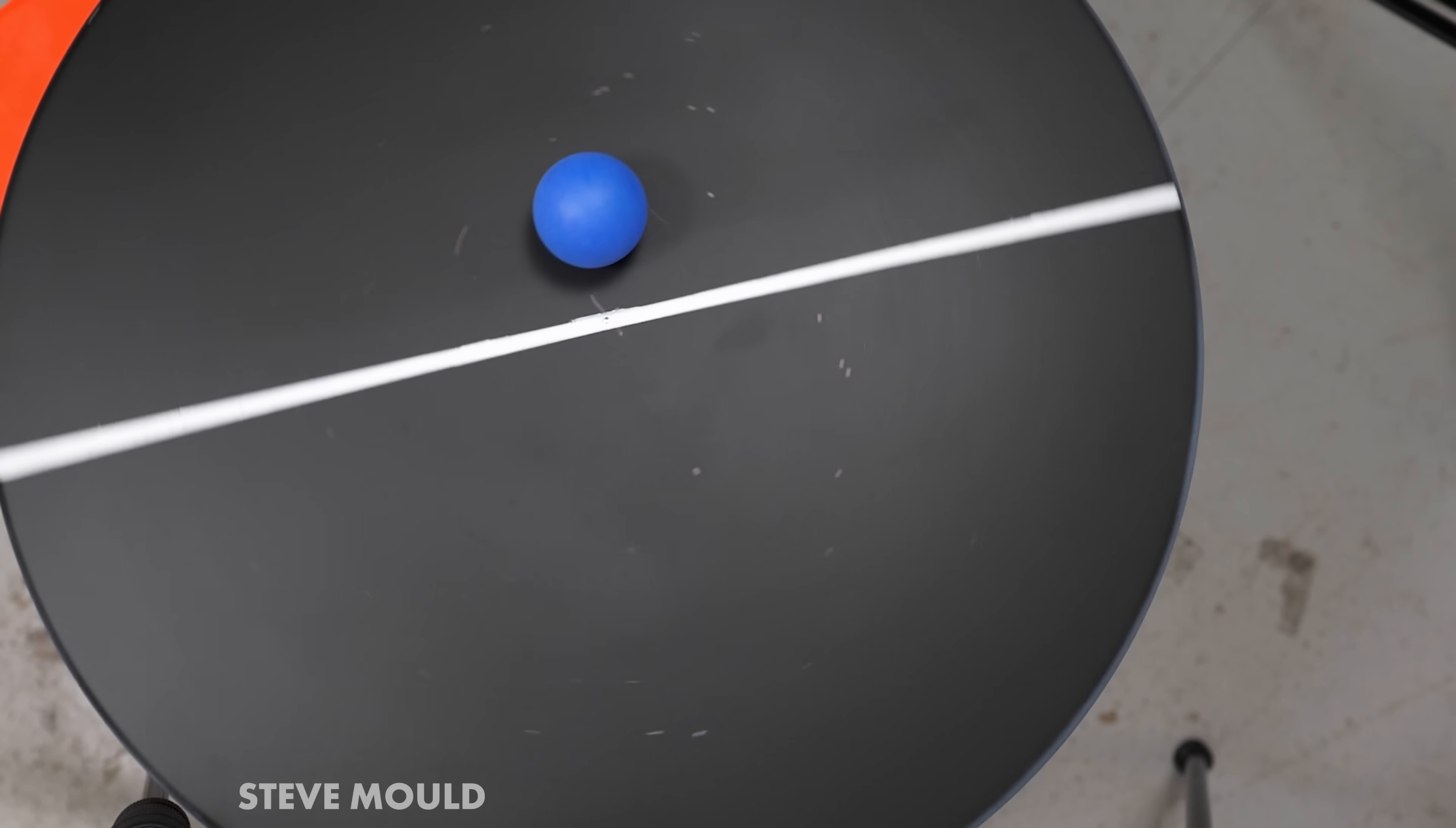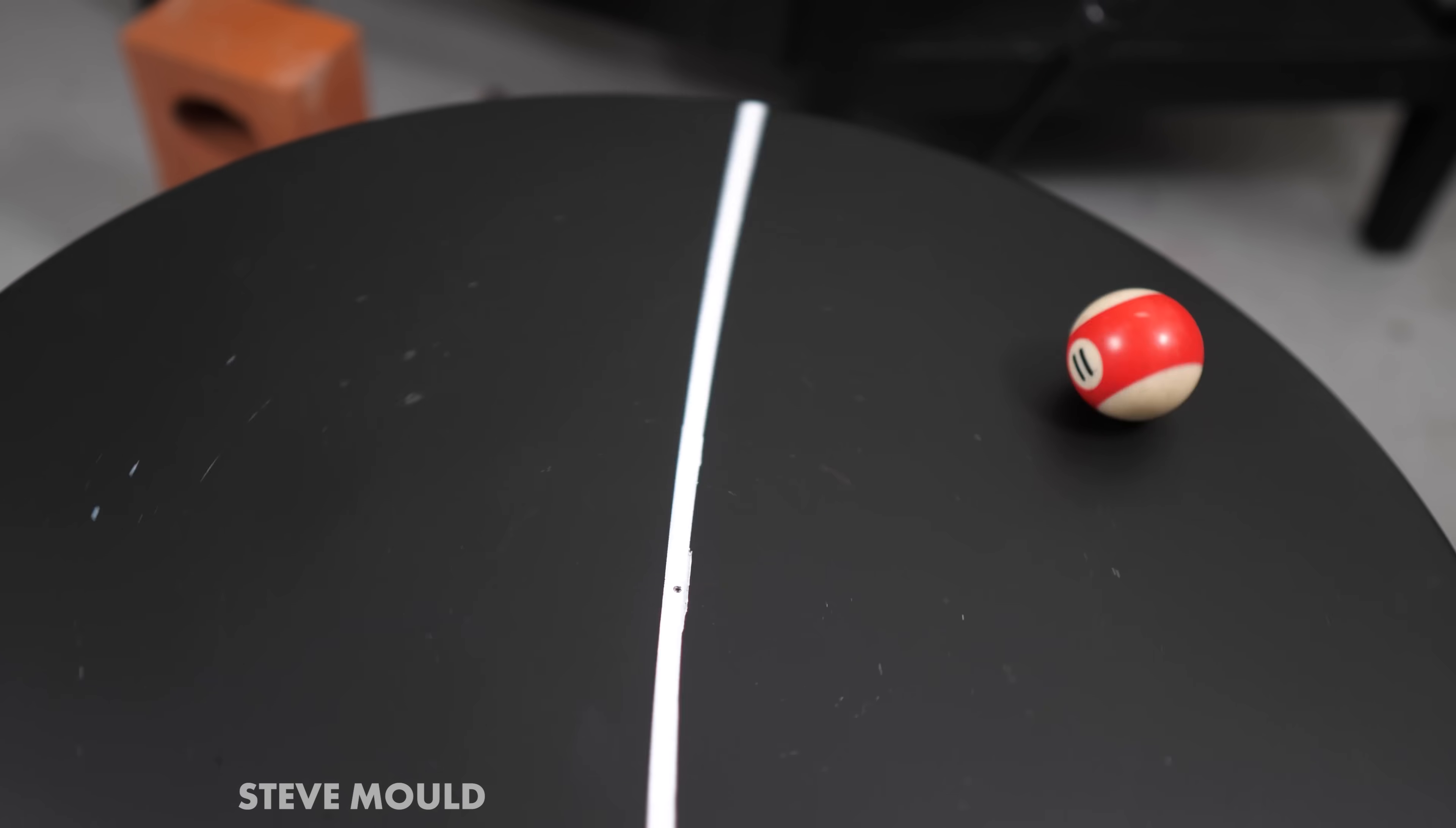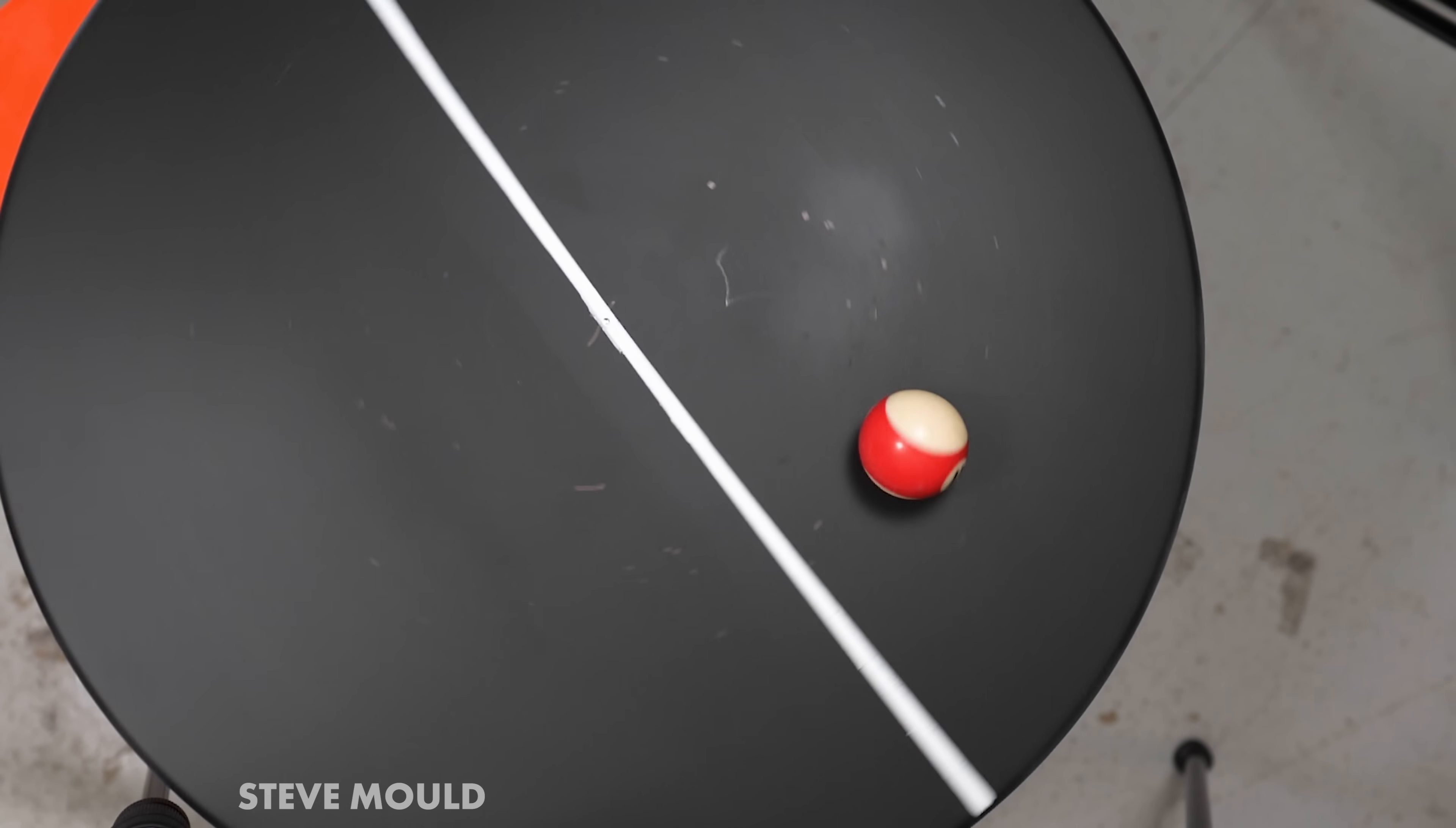You can also think about this in terms of the Coriolis force. The Coriolis force you might know is a fictitious force that you only experience when you're in a rotating reference frame. That's a non-inertial reference frame. And because we're analyzing this from the lab frame, if you like, which is inertial, then it's maybe not that useful to think in terms of the Coriolis force. But in the same way that winds traveling north in the northern hemisphere are deflected to the east, when I nudge this ball towards the center of the disc, it's deflected to the right.